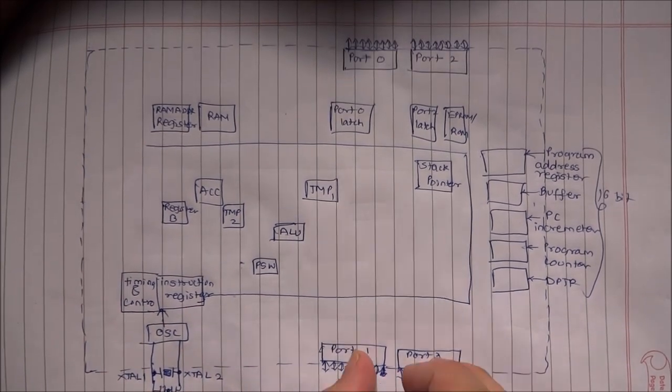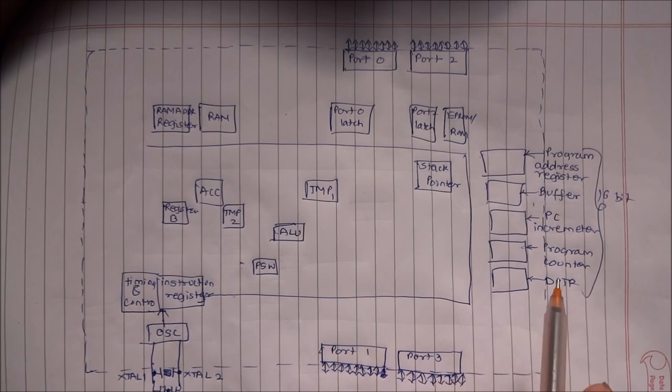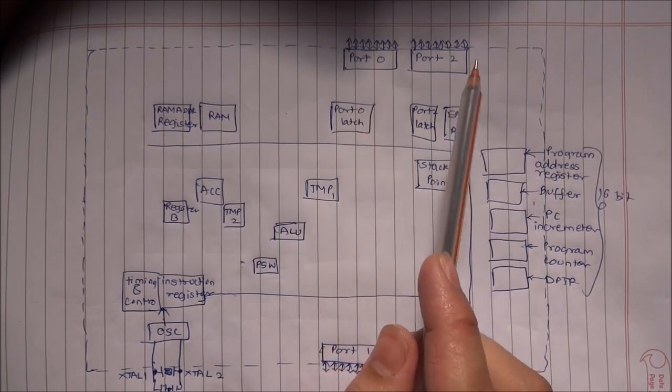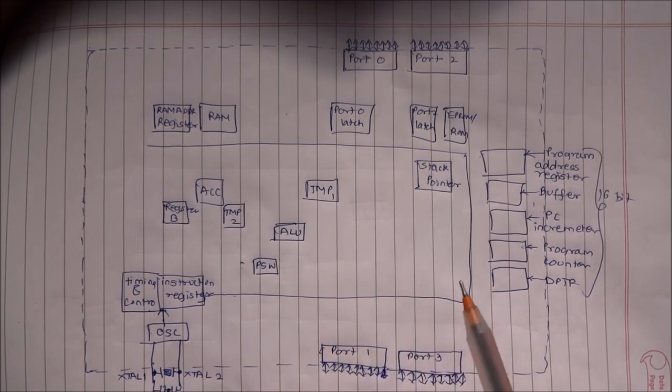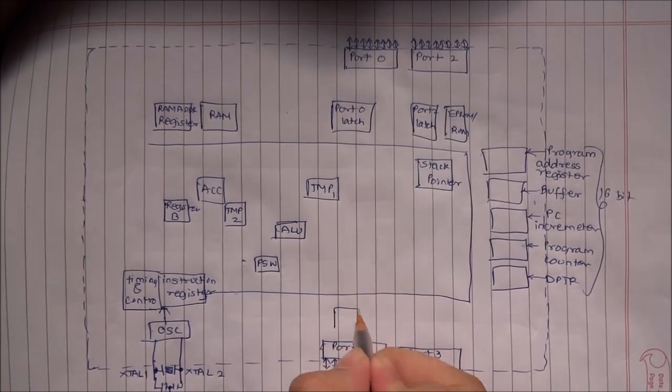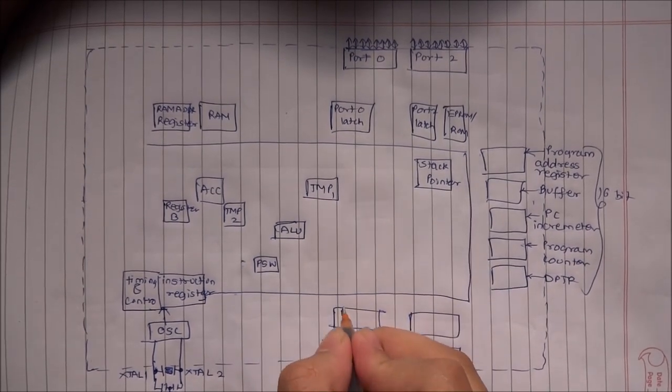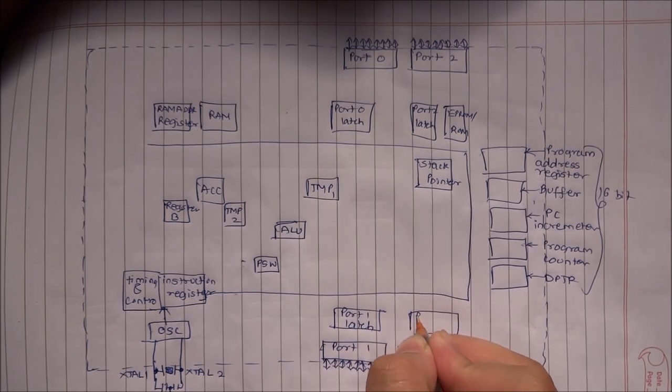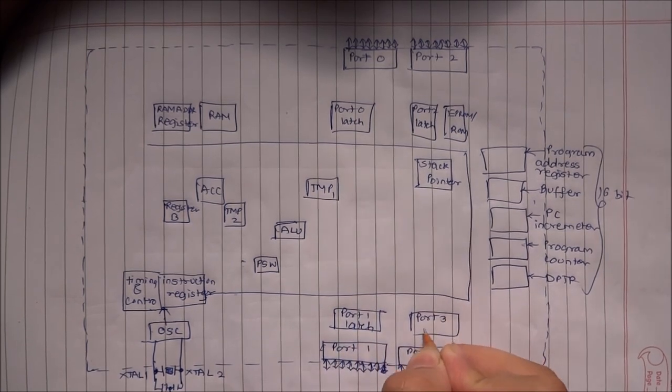Now make sure that above each port you have their latches. The port 0 has its latch here, the port 2 has its latch here, port 1 here, and port 3 will be here. So I'm drawing the same: port 1 latch, port 3 latch, port 2 latch.